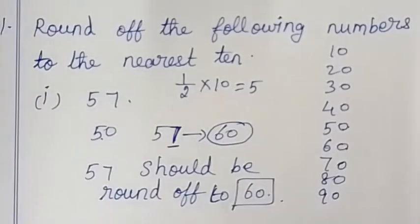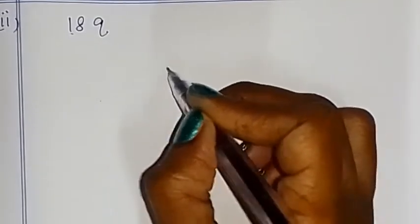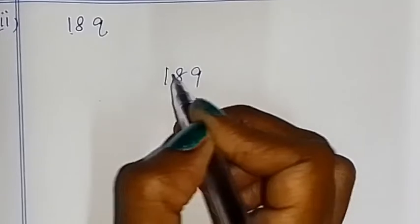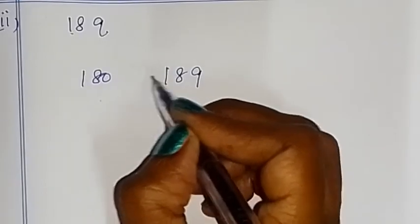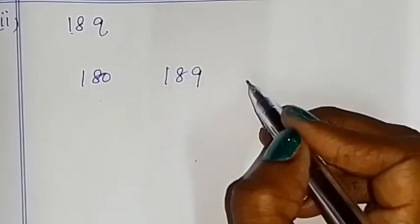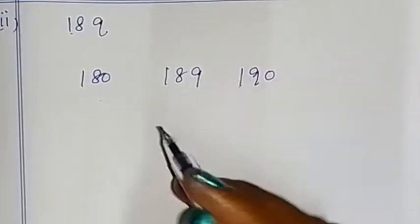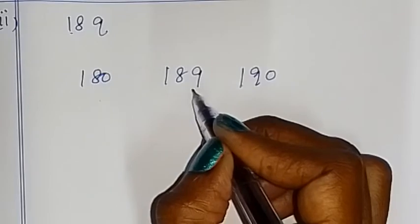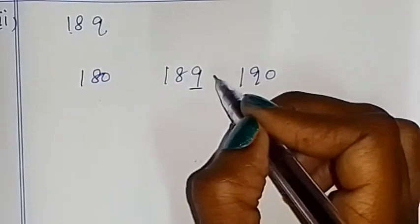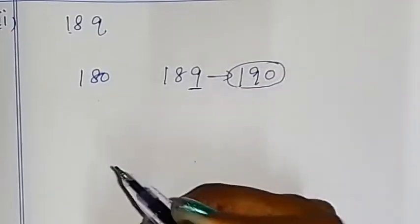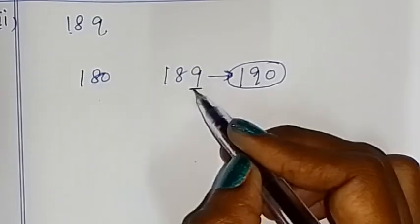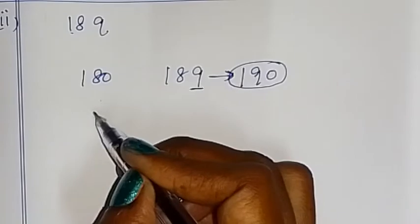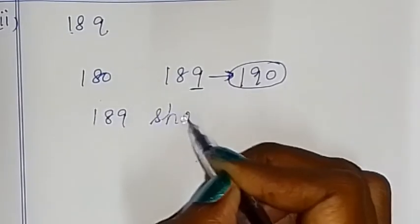We will find the nearest 10 for 189. Before 10 is 180, and after is 190. The half of 10 is 5. Since the ones digit 9 is greater than 5, 189 should be rounded off to 190.